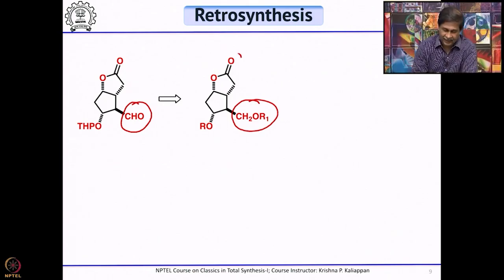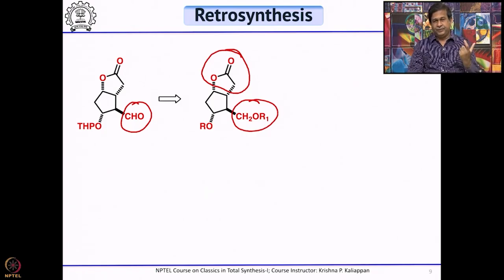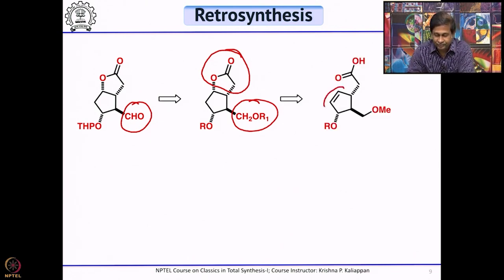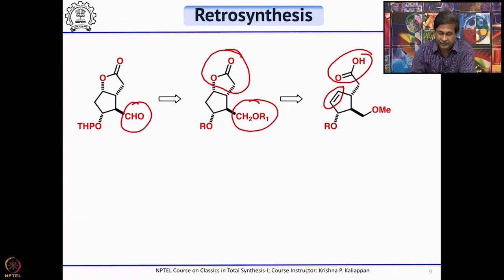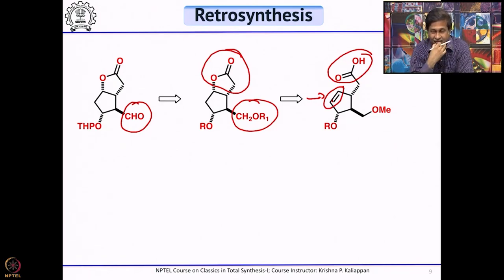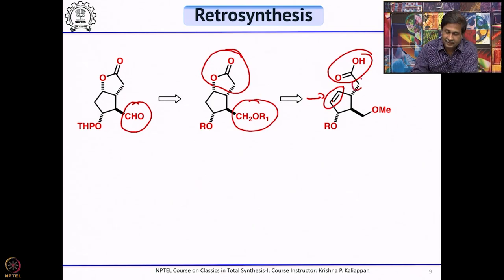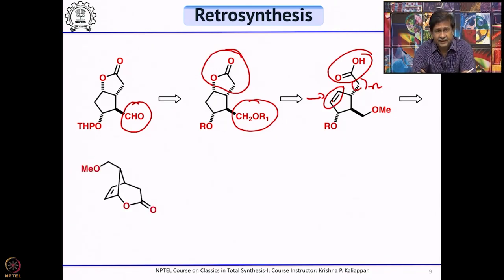Whenever you want to synthesize a 5-membered lactone, a reaction which should come to mind is iodolactonization. If you have a double bond and a carboxylic acid, and you treat with iodine or potassium iodide in the presence of sodium bicarbonate, first an iodonium ion will form, followed by intramolecular attack of the carboxylate, opening the iodonium ion to give the iodolactone. That iodine can easily be removed with tributyltin hydride.